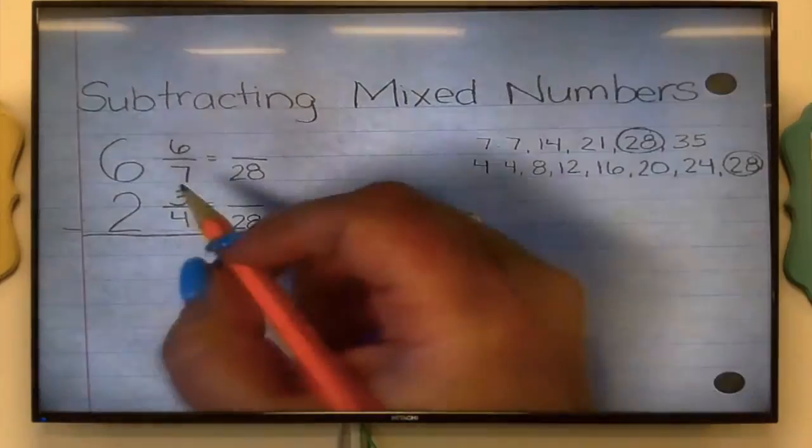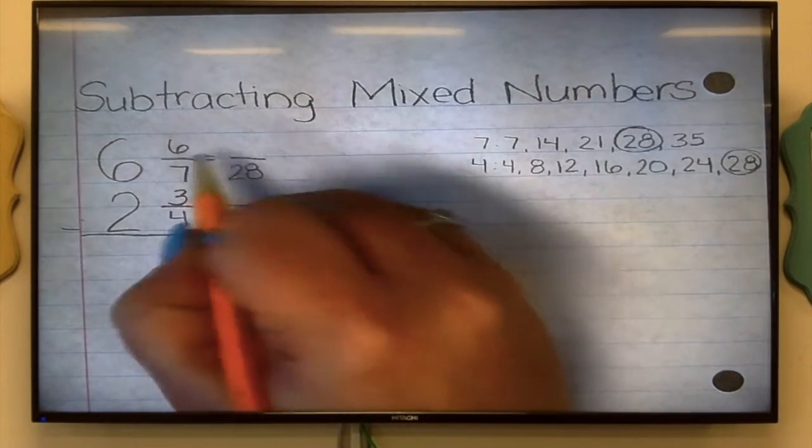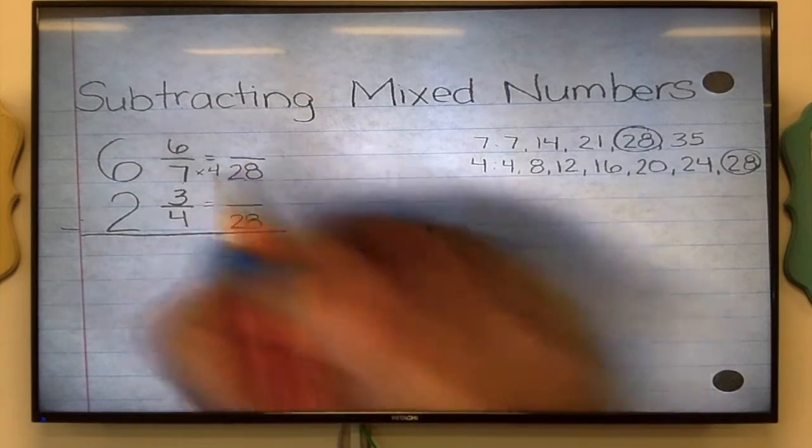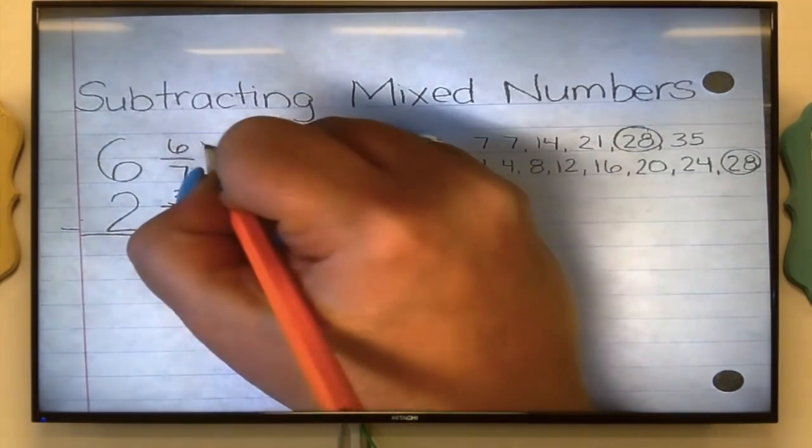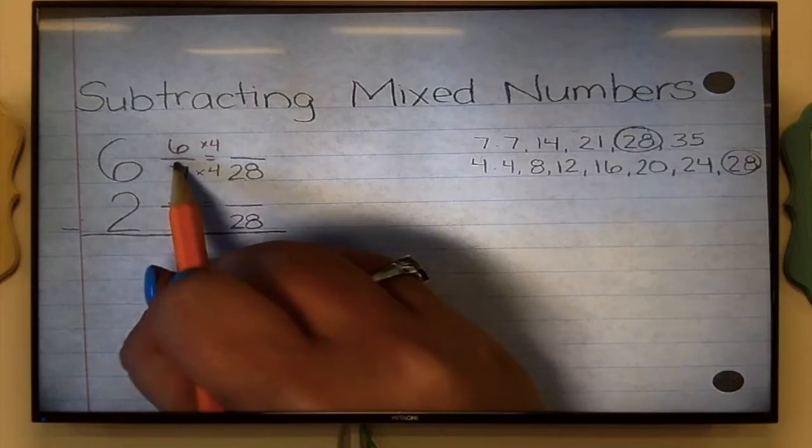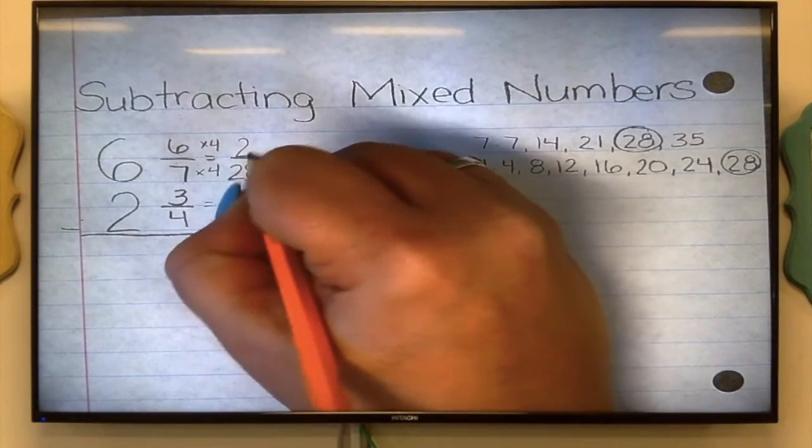For the first fraction, how do I go from being 7 to being 28? Times 4. If I multiply the bottom by 4, multiply the top by 4. 6 times 4 is 24.